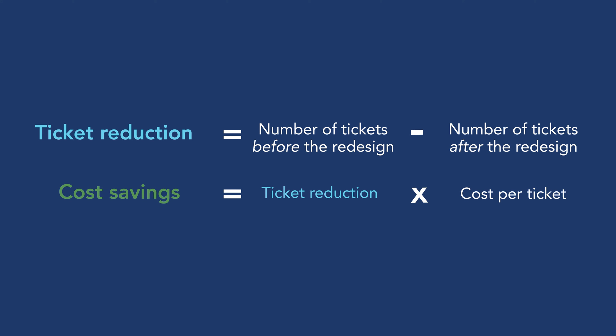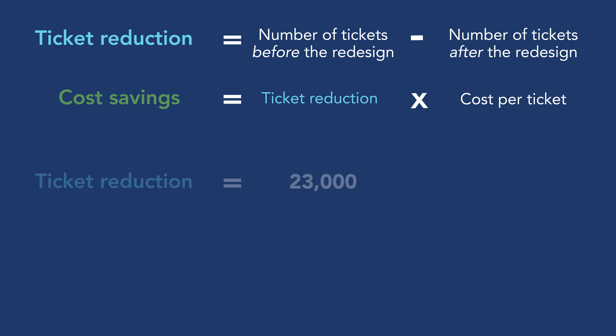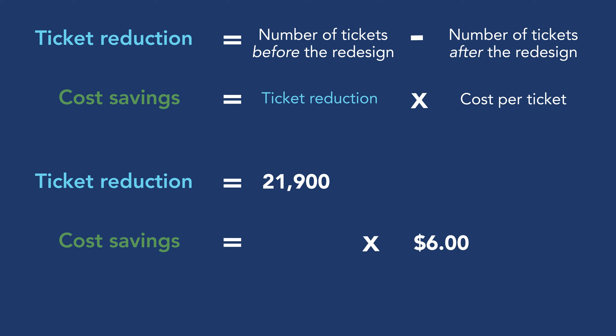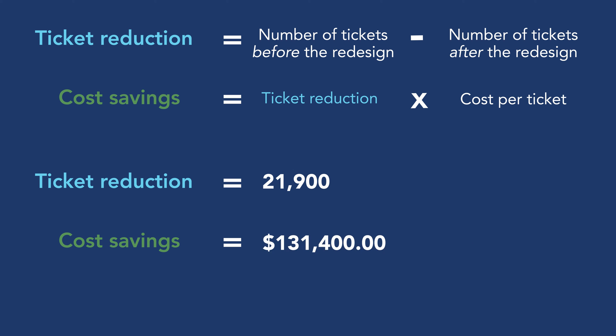Let's go back to our health insurance site example and imagine that we picked support tickets as our UX metric and cost savings as our KPI. We had 23,000 tickets for registration the month before the redesign. Our design improvements fixed glaring usability issues, so people can now easily complete the task on their own — resulting in only 1,100 tickets the month after. That's a reduction of 21,900 tickets. At $6 per ticket, our projected monthly cost savings are $131,400.